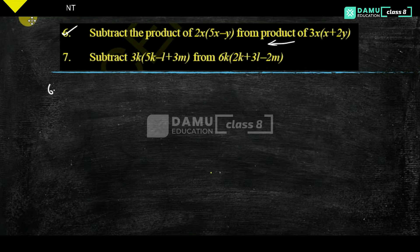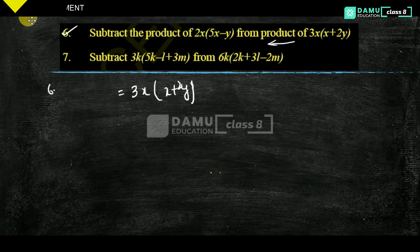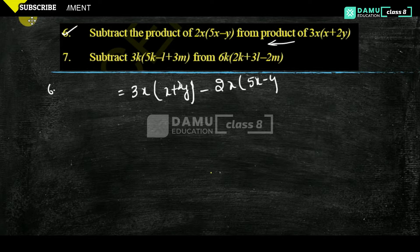So the sixth one: subtract 3x into x plus 2y, minus 2x into 5x minus y.